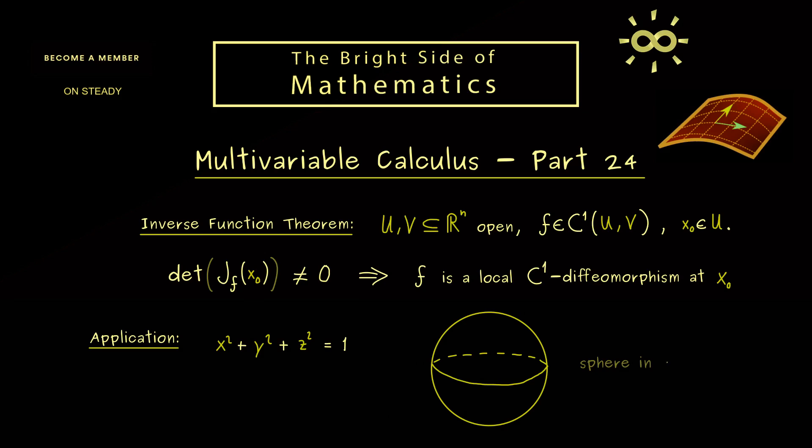Let's say we have x² plus y² plus z² is equal to 1. So you might know, this equation exactly describes the sphere in R³ with radius 1. And now a common question is, can we describe this surface in R³ with a function?